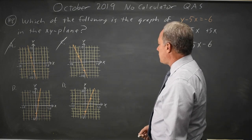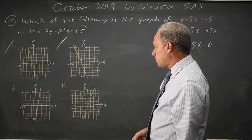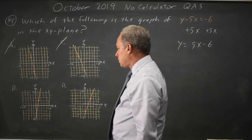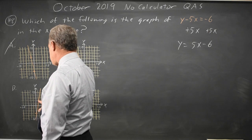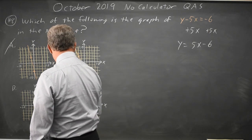And that leaves B and D. The slope of B, we go up 5 squares, we go right 1 square, which sounds like a 5.